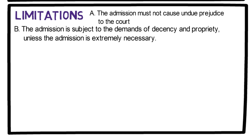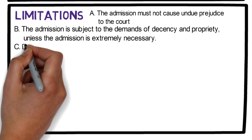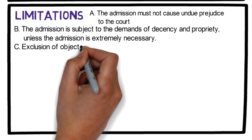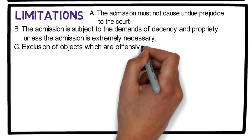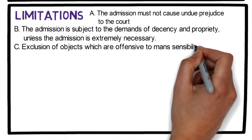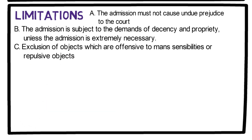However, where the accused is an old man, the court in its discretion may allow the old man to show his private parts to prove he is incapable of committing the crime. Third limitation: exclusion of objects which are offensive to man's sensibilities or repulsive objects.